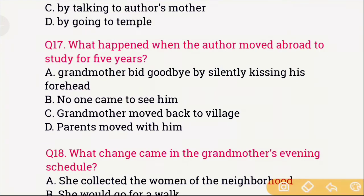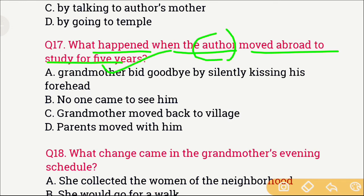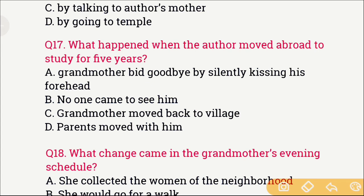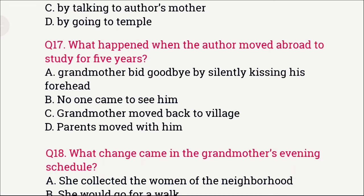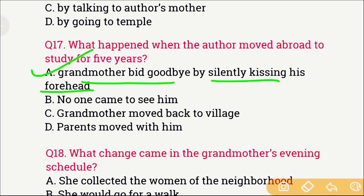Question number 16: What happened when the author moved abroad to study for 5 years? The options are: A) Grandmother bid goodbye by silently kissing his forehead, B) No one came to see him, C) Grandmother moved back to the village, and D) Parents moved with him. The right answer is option A — grandmother bid goodbye by silently kissing his forehead at the railway station.